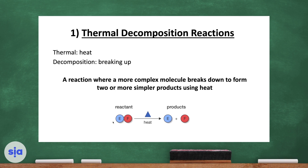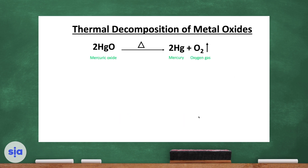Look at this equation. Before the arrow, the compound is formed of two elements E and F bonded together — this is the reactant. Whenever you find the triangle symbol, it means heat. This reactant will be decomposed by heat into two separate products, E and F. This means thermal decomposition involves using heat to break up compounds into products.